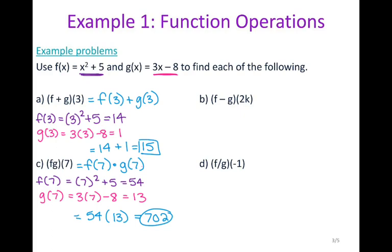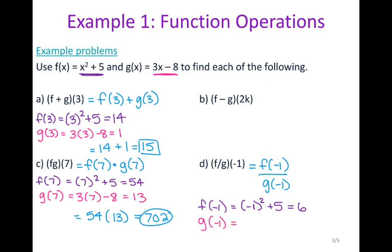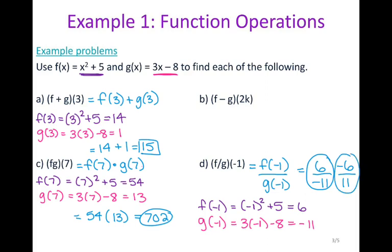For d, f of negative 1 divided by g of negative 1. Make sure you put negative 1 in parentheses before squaring: negative 1 squared plus 5 gives 6. g of negative 1 is 3 times negative 1 minus 8, which is negative 11. So the answer is 6 over negative 11, which you can also write as negative 6 over 11.